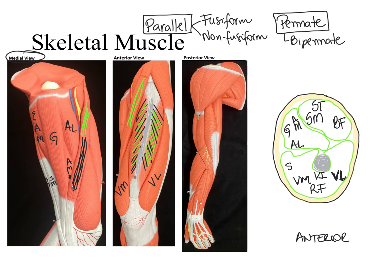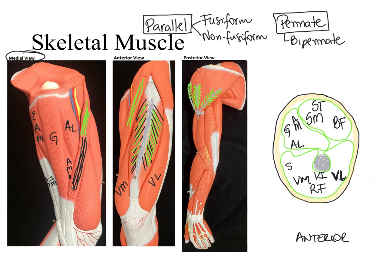The deltoid muscle, found in our upper limb with a delta-letter shape upside down, has a central tendon that branches into more tendons — one going to the posterior aspect, one laterally, and one anteriorly. The fascicles connect to these tendon branches, running in a multitude of directions. That is why the deltoid muscle is an example of a multipennate muscle.